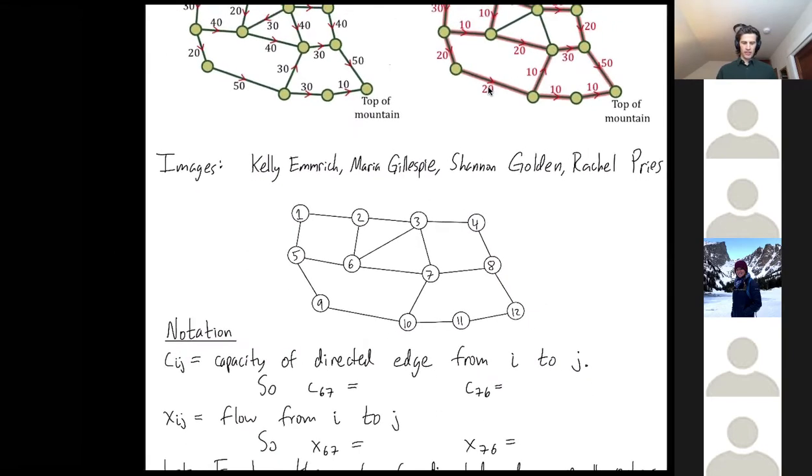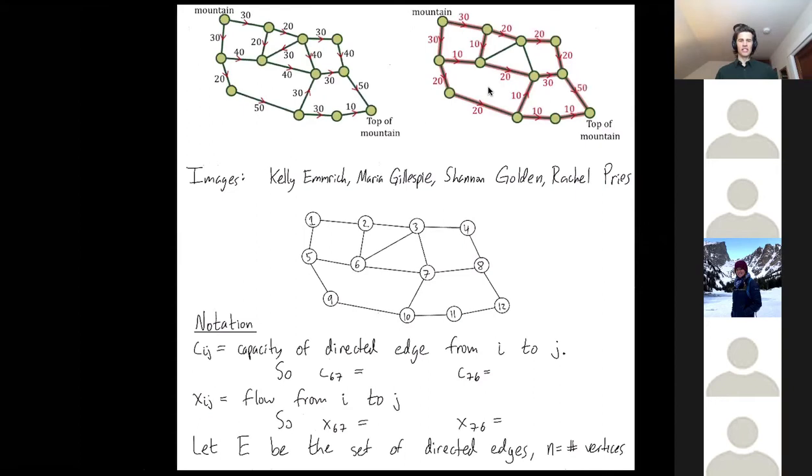Let me introduce some notation. I've labeled the vertices from 1 to 12 and n will be the number of vertices. Each edge has a name ij. So this edge going to the right is the edge 2,3, whereas this edge going to the left is 3,2. Cij is the capacity of the directed edge from i to j. So in particular, C67, what's our capacity going from vertex 6 to vertex 7? C67 is 40, this number up there. What is our capacity going from 7 back to 6? Well that's 0, we don't even have a lift going in that direction.